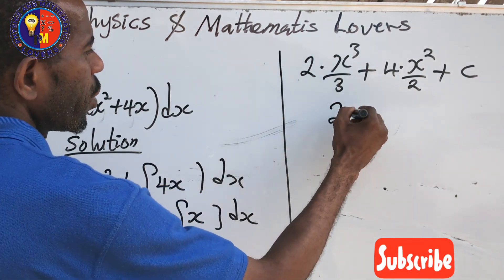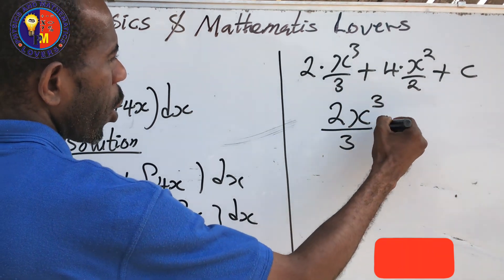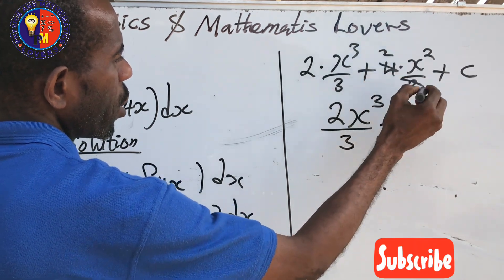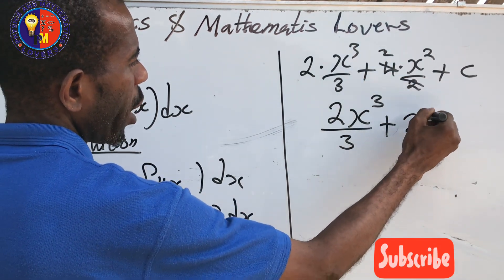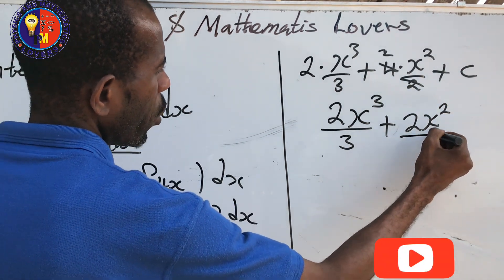We have 2x³/3 plus 4, and 2 can cancel here to give you 2. So here we're going to have 2x² plus c. That's your answer.